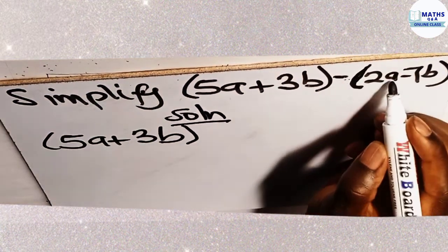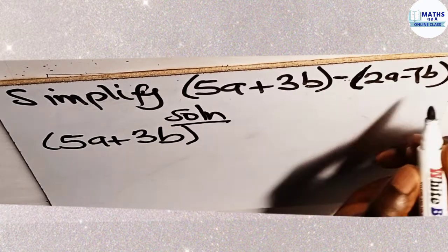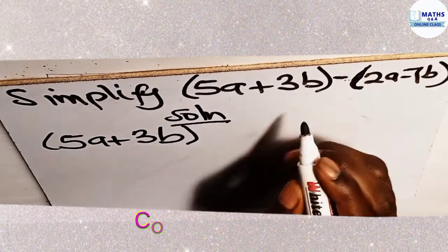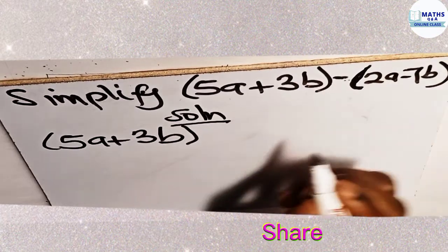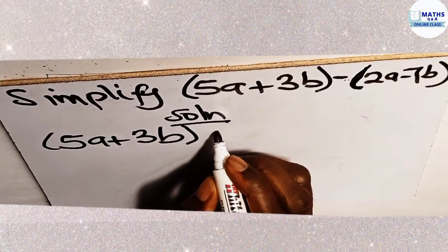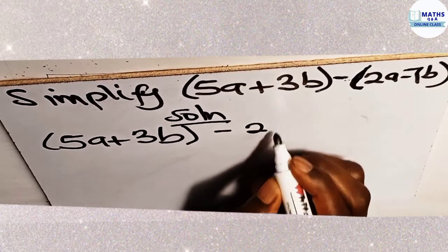So negative 1, you multiply by this. Negative 1, you multiply by that. Now, so negative multiplying 2a gives us negative 2a.